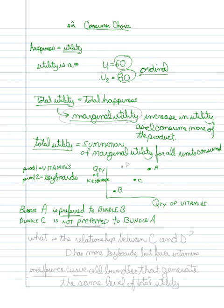That bundle C is not preferred to bundle A. Because it has less of both goods. And, I could have said the same for B as well. That bundle B is also not preferred to bundle A. So, I have two notions of the kind of relationship that can exist. One where it's preferred, and one where it's not preferred.